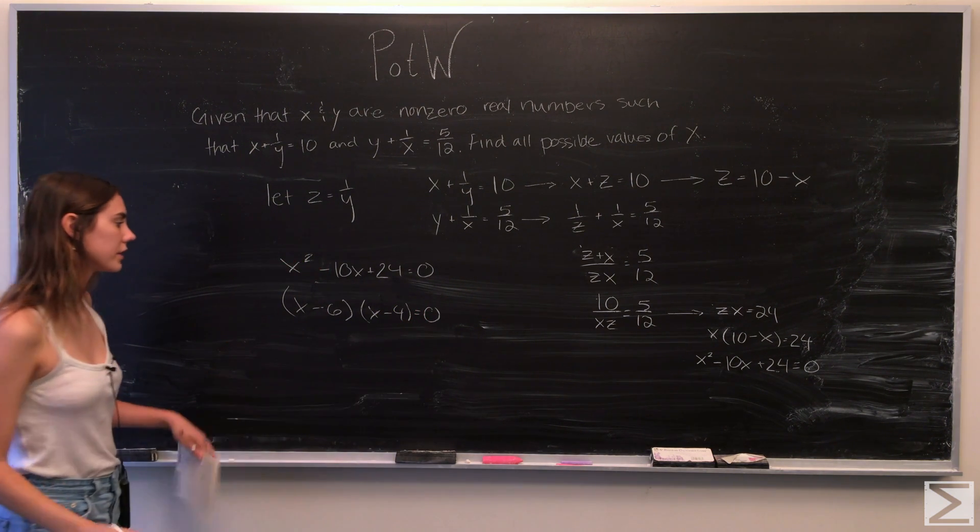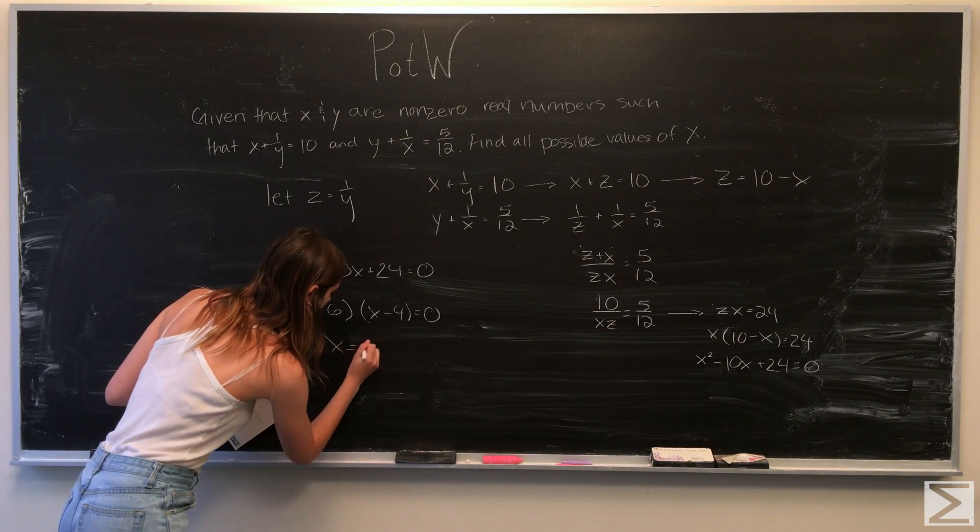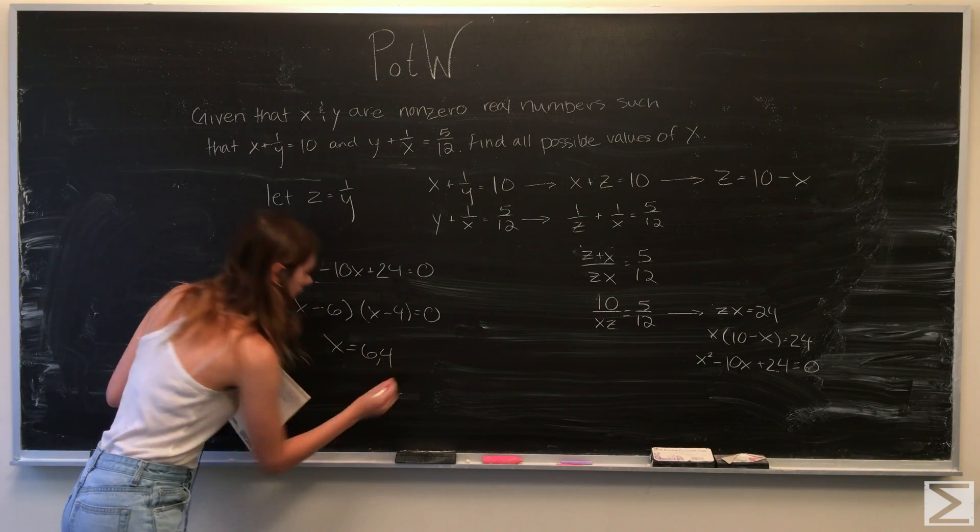So therefore, the two options for what x could be are 6 and 4.